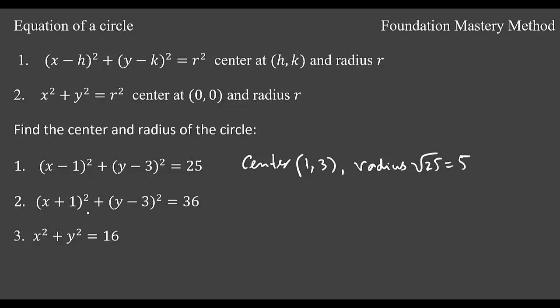If you go to the second one, your center will be, take the opposite sign, 1 will be negative 1 and negative 3 will be 3. And the radius is the square root of 36 which is 6.